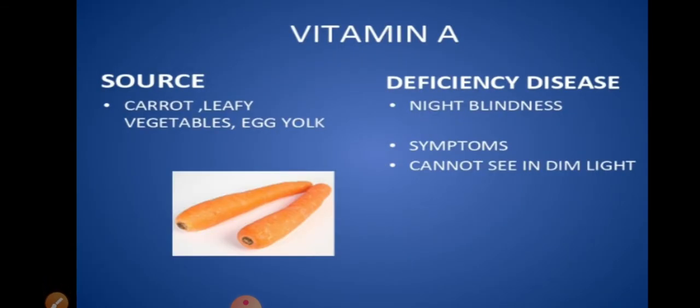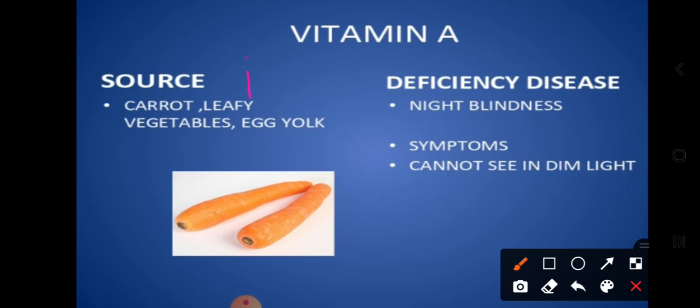The best example of fat-soluble vitamins is Vitamin A. Vitamin A is generally called retinol. It is a vitamin which is very important for proper vision. Vitamin A is richly available in food sources like carrots, leafy vegetables, egg, and egg yolk.